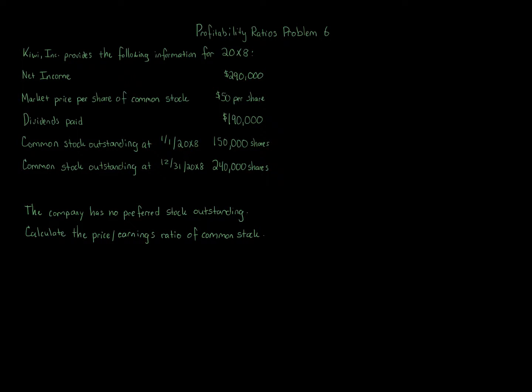Profitability Ratios Problem 6: Kiwi Inc. provides the following information for 20x8. Net Income $290,000. Market Price Per Share of Common Stock $50 Per Share. Dividends Paid $190,000. Common Stock Outstanding at January 1st, 20x8: 150,000 Shares. Common Stock Outstanding at December 31st, 20x8: 240,000 Shares. The Company Has No Preferred Stock Outstanding. Calculate the Price Earnings Ratio of Common Stock.